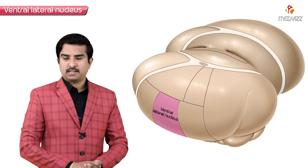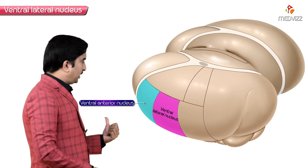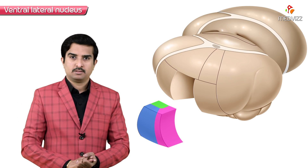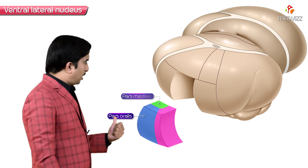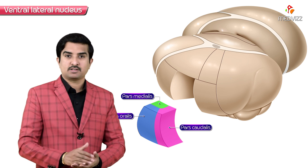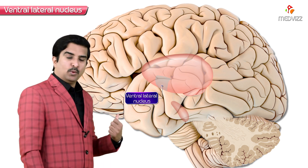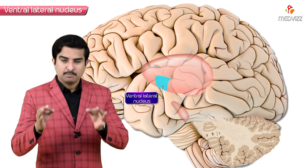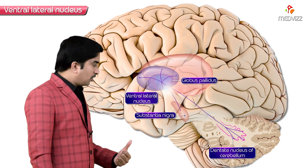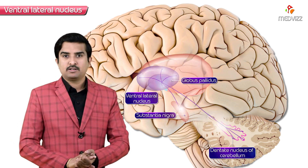The ventral lateral nucleus of the thalamus lies immediately caudal to the ventral anterior nucleus. It consists of three subdivisions: pars oralis, pars medialis, and pars caudalis. The subcortical afferents to the ventral lateral nucleus originate mainly from the ipsilateral globus pallidus and substantia nigra, as well as from the contralateral dentate nucleus of the cerebellum.